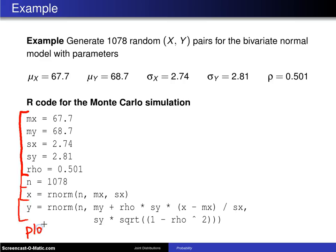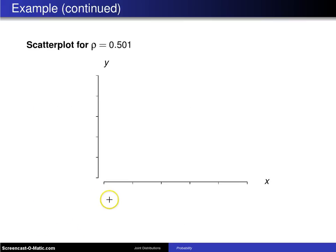If you throw on to this a scatter plot, and that would just be plot X versus Y, then what you'll see on the next slide is an axis that runs from 55 to 80.